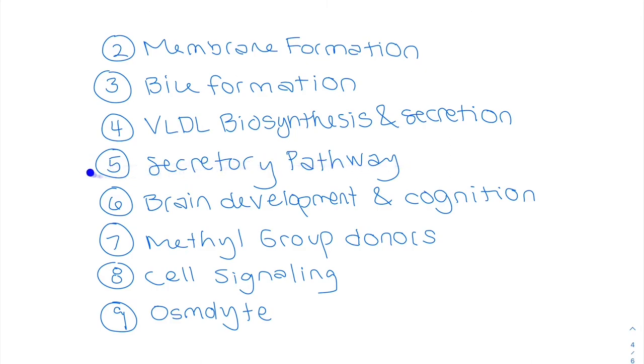Fifth, we have this secretory pathway. The Golgi also need phosphatidylcholine because the Golgi is basically budding off of the membranes for vesicular transport. So again, it plays a role with the membranes.